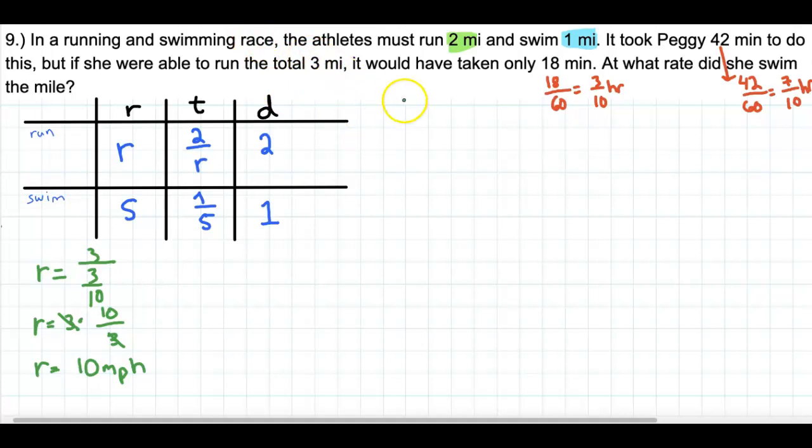Let's look at, now we have that. Now what's the other thing? We know the total amount of time. So we've got the running time, which is here, 2 over R, and the swimming time is 1 over S, and gives us a total of 42 minutes, which is 7 tenths. So let me just write that out.